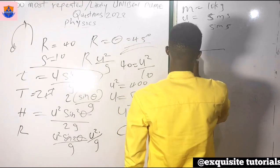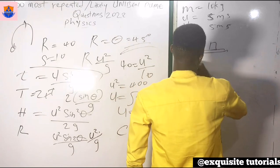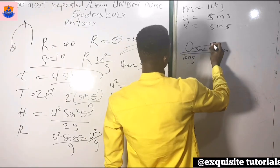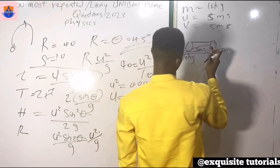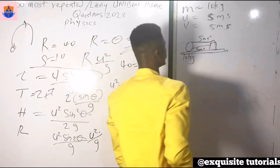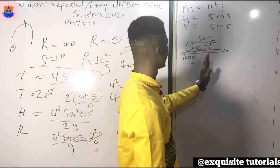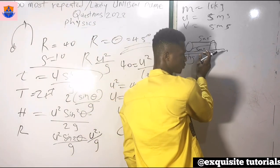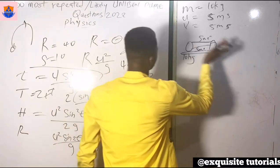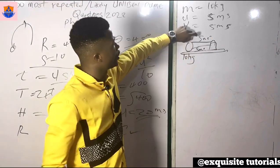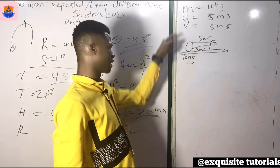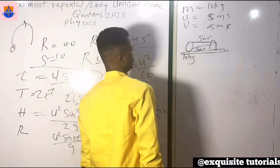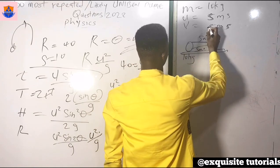Let's draw a diagram. The ball of mass 10 kg moves horizontally, strikes the wall at 5 m/s, and bounces back at 5 m/s. Going toward the wall is positive velocity. Coming back is negative velocity — it's a retardation since it returns to where it started. So the return velocity is −5 m/s.